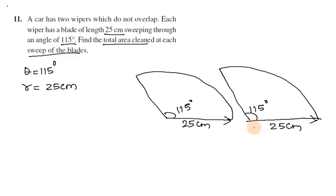If they do not overlap, we can sweep the entire shape. This is a sector formula. We calculate the area of sector, so this is 2 times multiply: 2 into theta by 360 into pi r square.